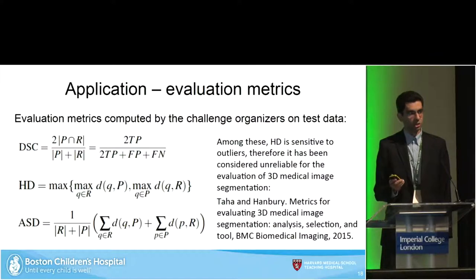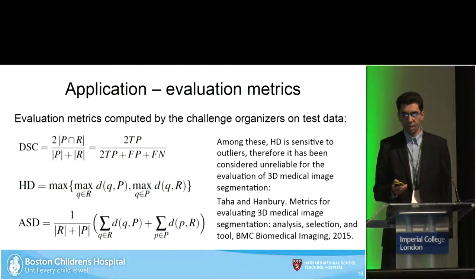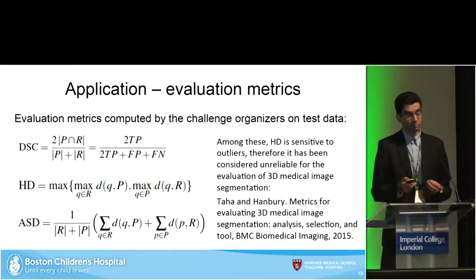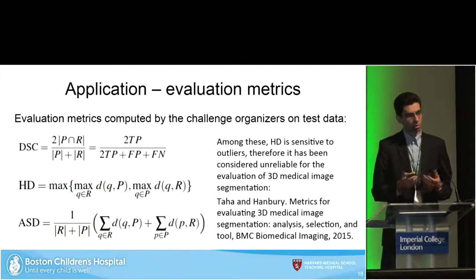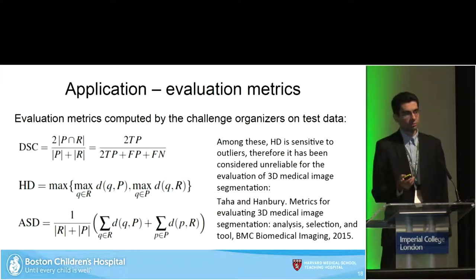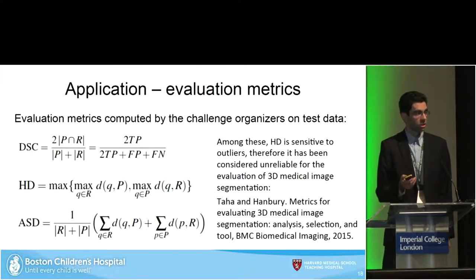The iSEC challenge has a blind test set of 13 images, and automatically they report the DICE similarity coefficient, Hausdorff distance, and average surface distance. We saw some differences between HD and ASD, whereas normally you would expect two surface distance measures to show relatively the same performance. However, HD, because of those max operations it uses to match points, is more sensitive to outliers. There are recommendations to avoid using HD and use its adapted versions to deal with that problem.